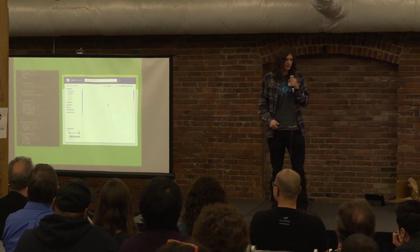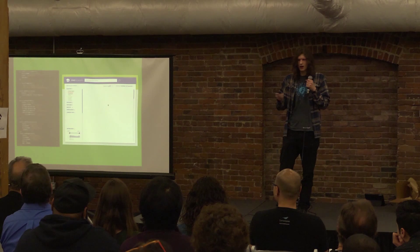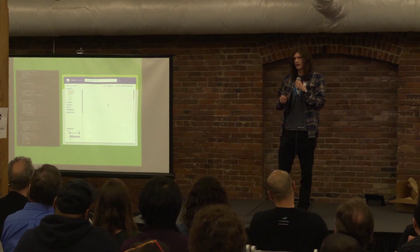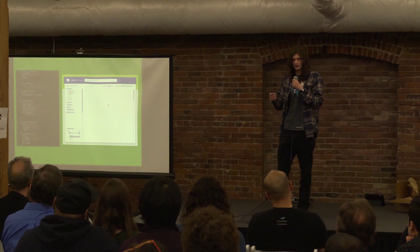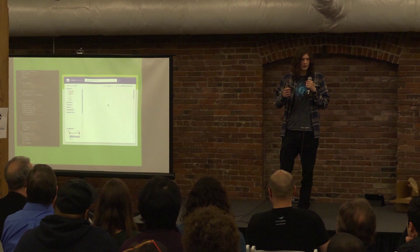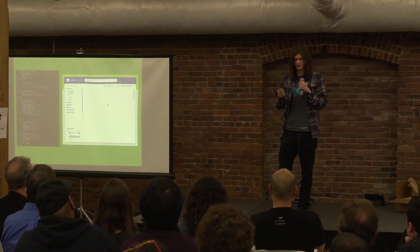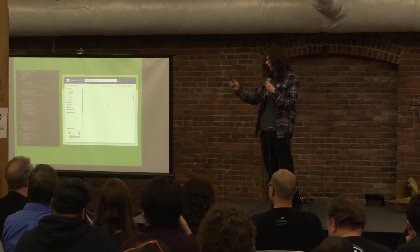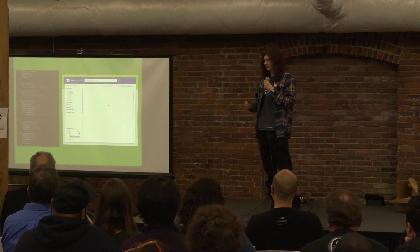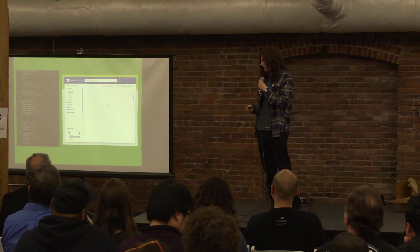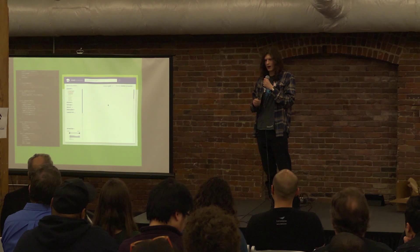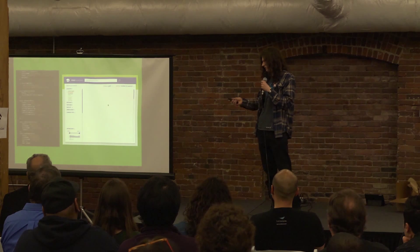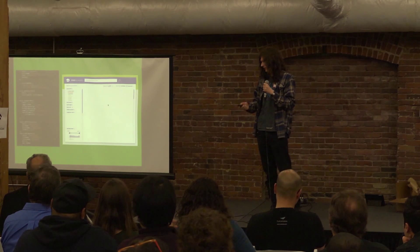One of our biggest problems was that even with all these awesome features, not all of our users were taking advantage of them. We found that one of the reasons was that building good search UI is really tough. And if you don't have the time or the resources to build UI to support these awesome backend features, it doesn't matter that they're easily available. So we have been working on a JavaScript library to provide state-of-the-art UI. It basically requires only CSS and a little bit of configuration, and we handle the rest. And I'm happy to say we're going to be open sourcing this later next month.